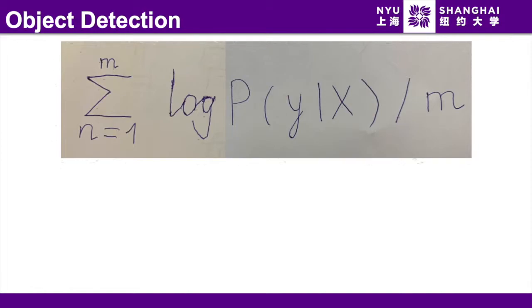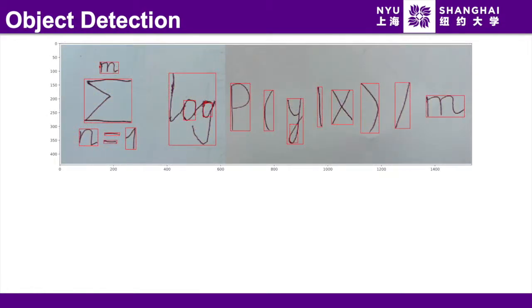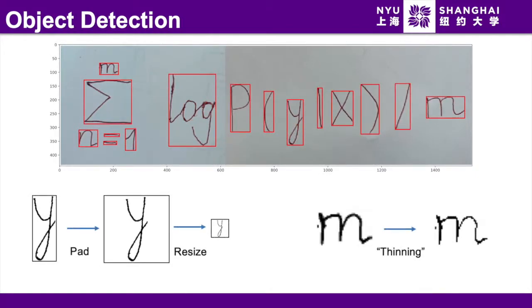First, we locate the characters by the finding contours method in OpenCV. Initially, the method would give a lot of extra boxes that do not contain a complete character. So we write an algorithm to ignore these boxes. Then we pad each character into a square image and resize it to 45 by 45.